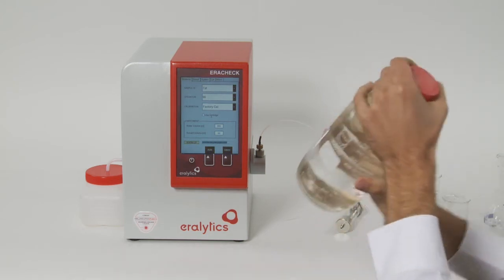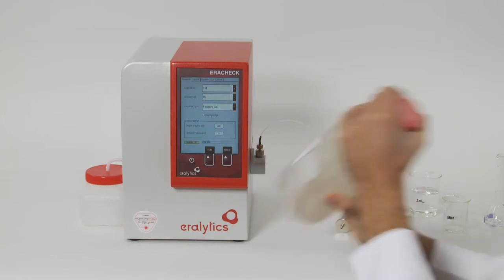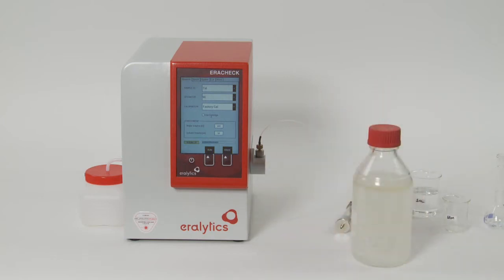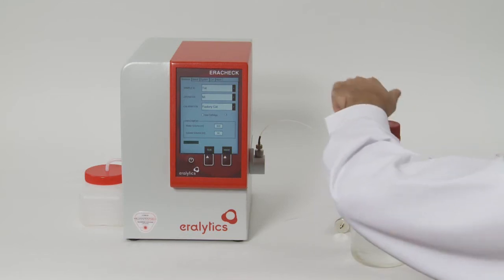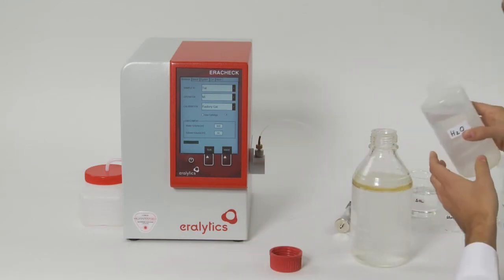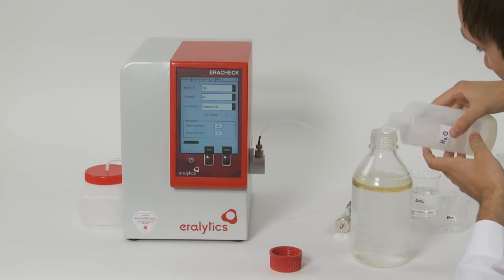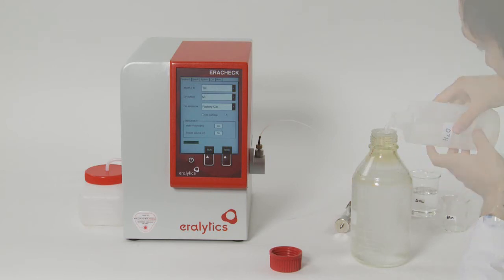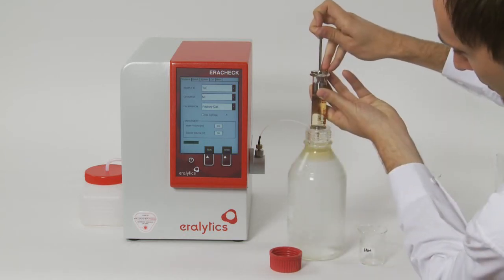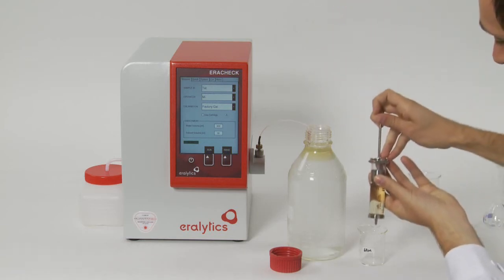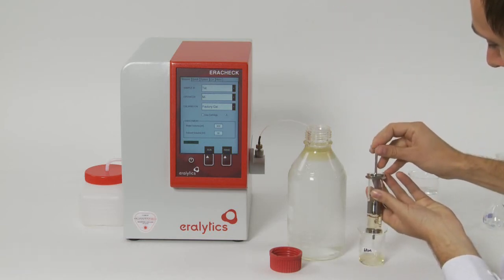Shake the bottle vigorously for a good extraction and then wait until the phase separation has completed. Now the hydrocarbons previously present in the water sample are concentrated in the solvent phase. Add some tap water to the sample bottle to lift the solvent phase to the top of the bottle.